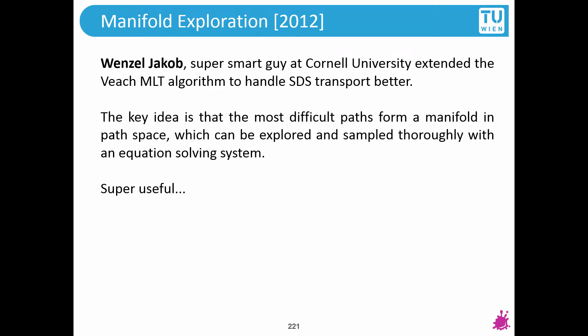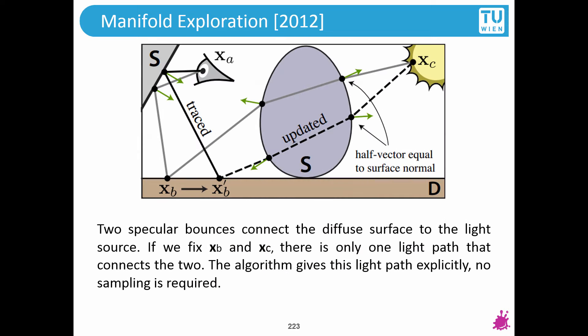Let's take a look at the intuition. This is super useful but very challenging to understand and implement for ordinary people. Now what is exactly happening here? We have a diffuse bounce — this is XB — and we hit the light source after that, which is XC on the upper right.